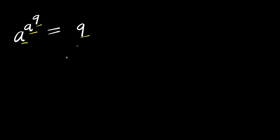We have a^(a^9) = 9, and we are solving for the value of a. Now let's raise each part of the equation to the power of 9, because we have 9 here already.